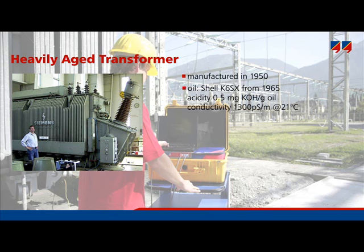The acidity in this case was 0.5, which indicates severe deterioration of the oil. The oil conductivity in the transformer was 1300 picosiemens per meter, compared to 0.05 picosiemens per meter for new oils. This illustrates how aging changes the oil conductivity — in our example, by a factor of 20,000.